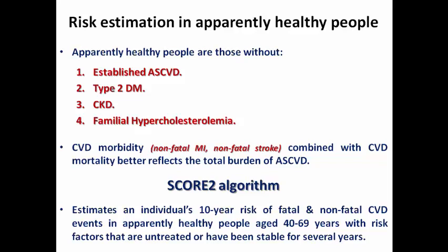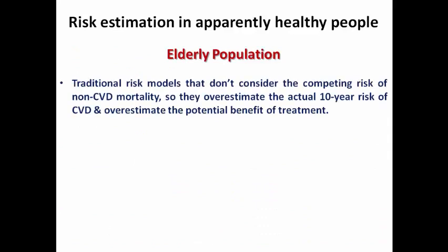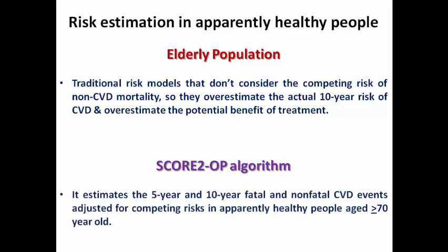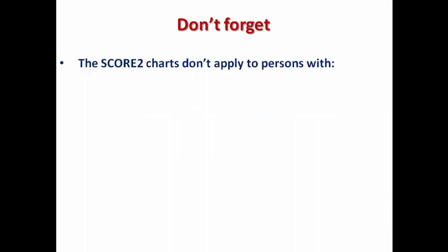SCORE2 is totally different from the SCORE algorithm in the 2016 guidelines, which estimated only the 10-year risk of fatal events. The challenge with the elderly population is that traditional risk models don't account for the competing risk of non-cardiovascular mortality. The incidence of non-cardiovascular disease increases with advancing age, so these models may overestimate the actual 10-year cardiovascular risk and overestimate the potential treatment benefit. That is why there is a specific subtype called SCORE2-OP — standing for Older Persons — which estimates both 5-year and 10-year risk of fatal and non-fatal cardiovascular events, adjusted for competing risk, in apparently healthy people aged 70 years or older.